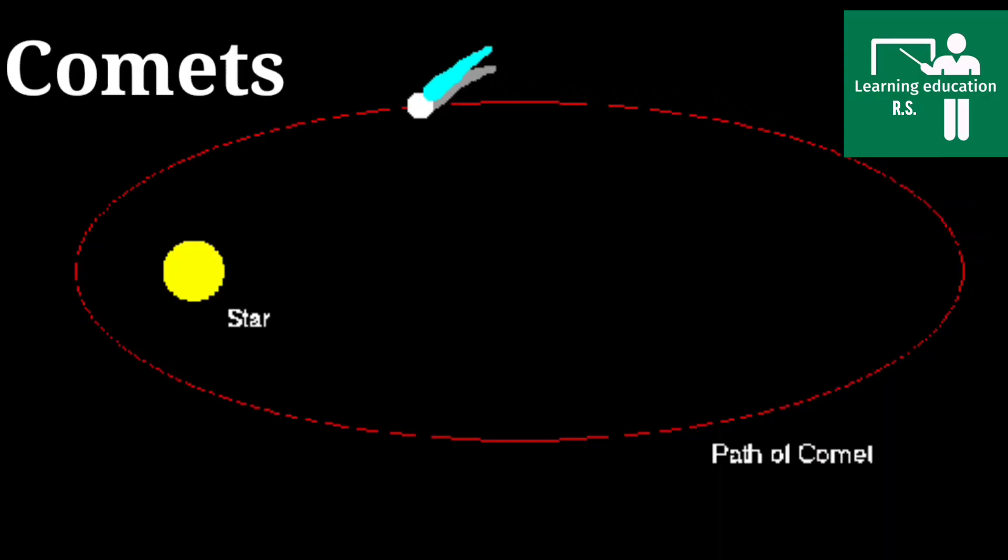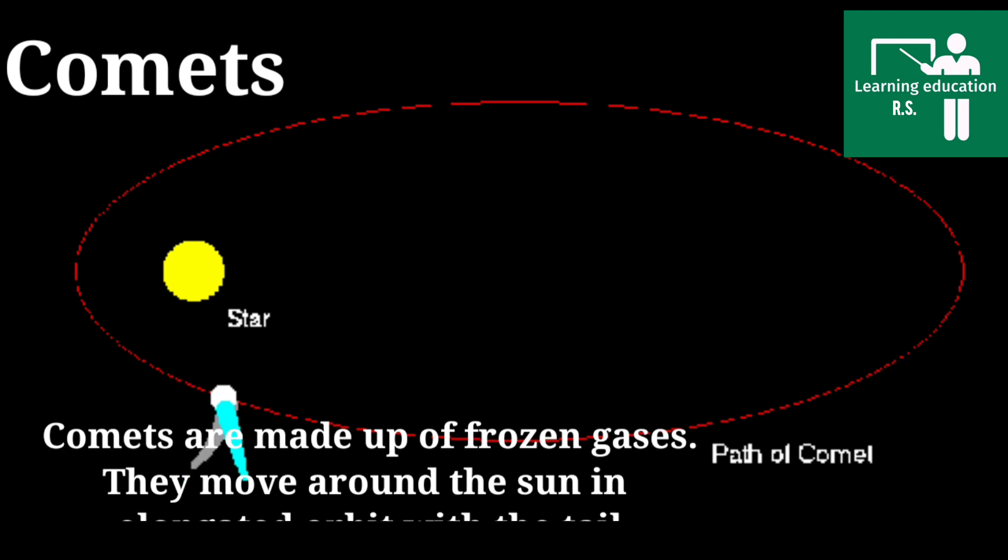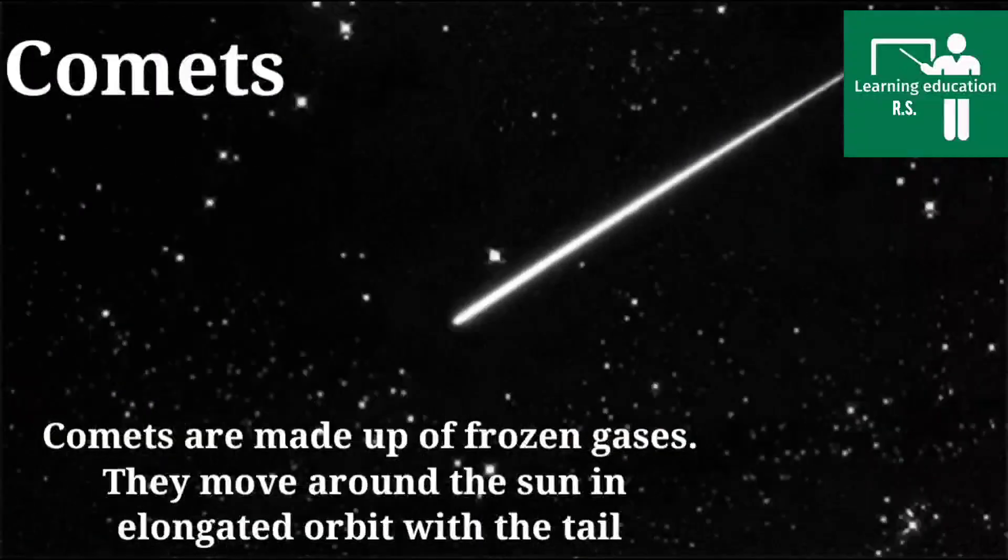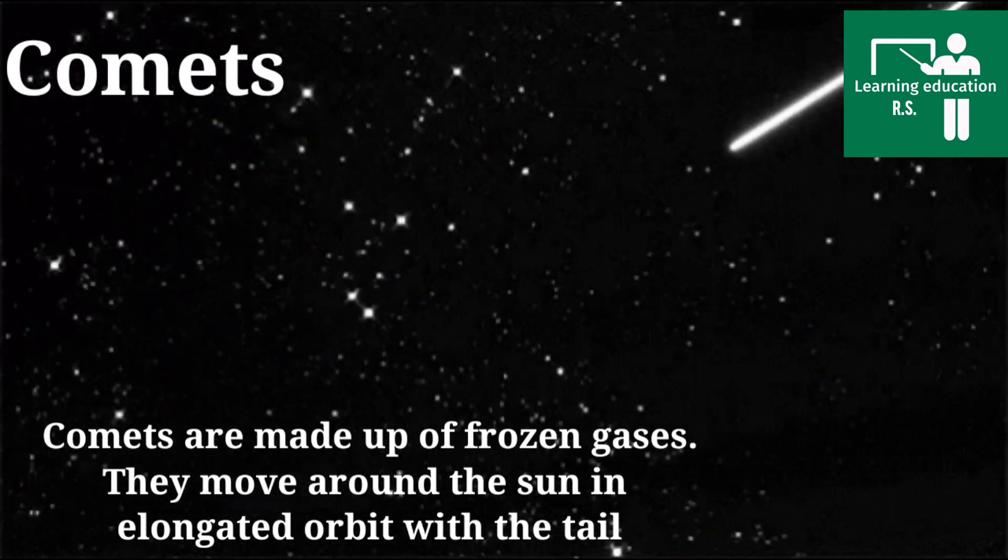Now, next important definition is comet. Comets are made up of frozen gases. They move around the sun in an elongated orbit. A comet is an object in space that looks like a bright star with a tail, and it moves around the sun. It looks like a bright star but has a tail, and moves around the sun.